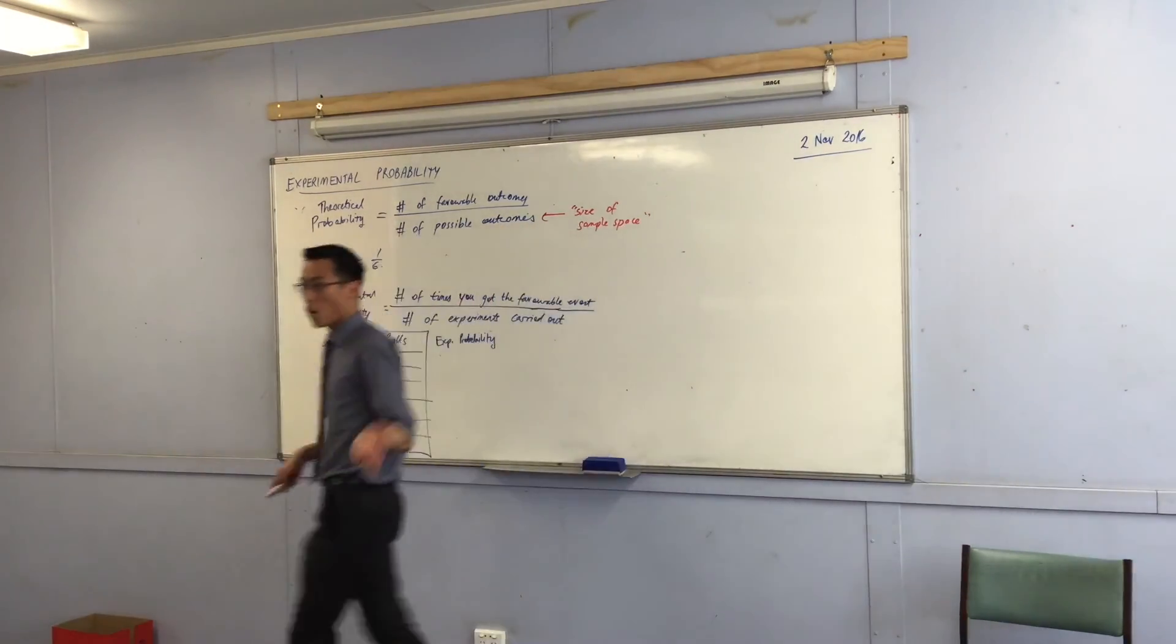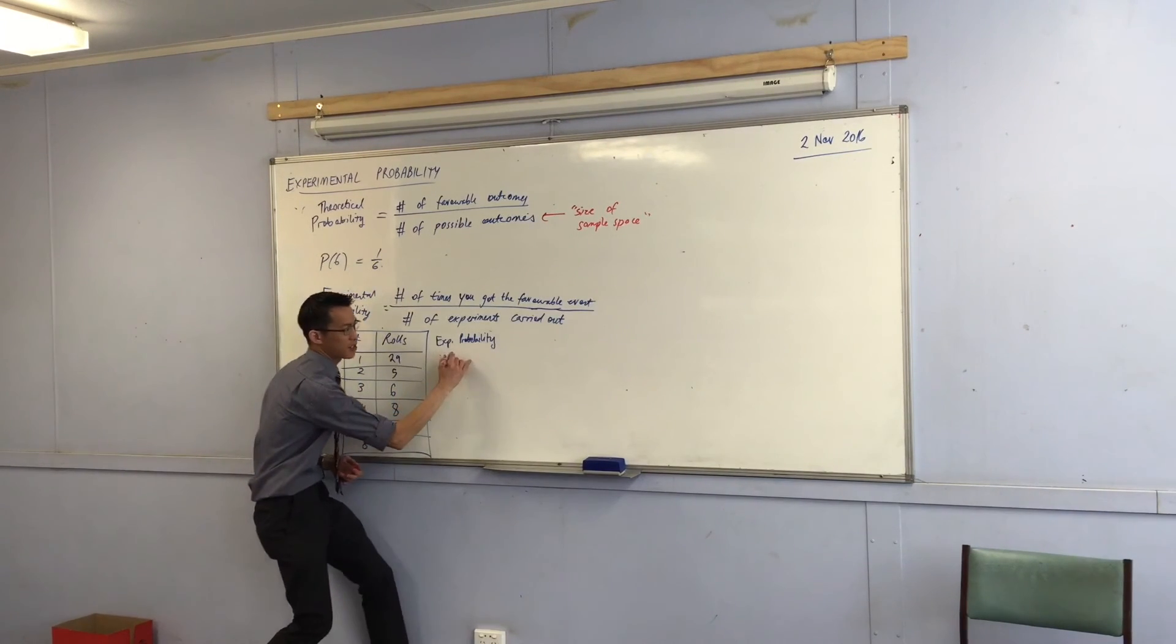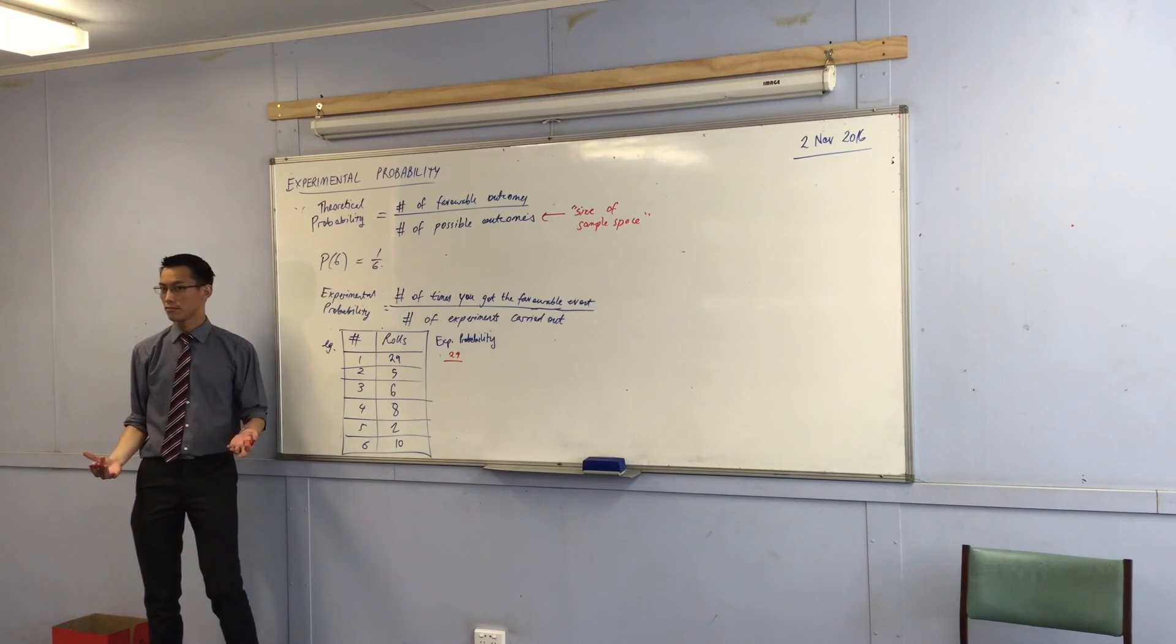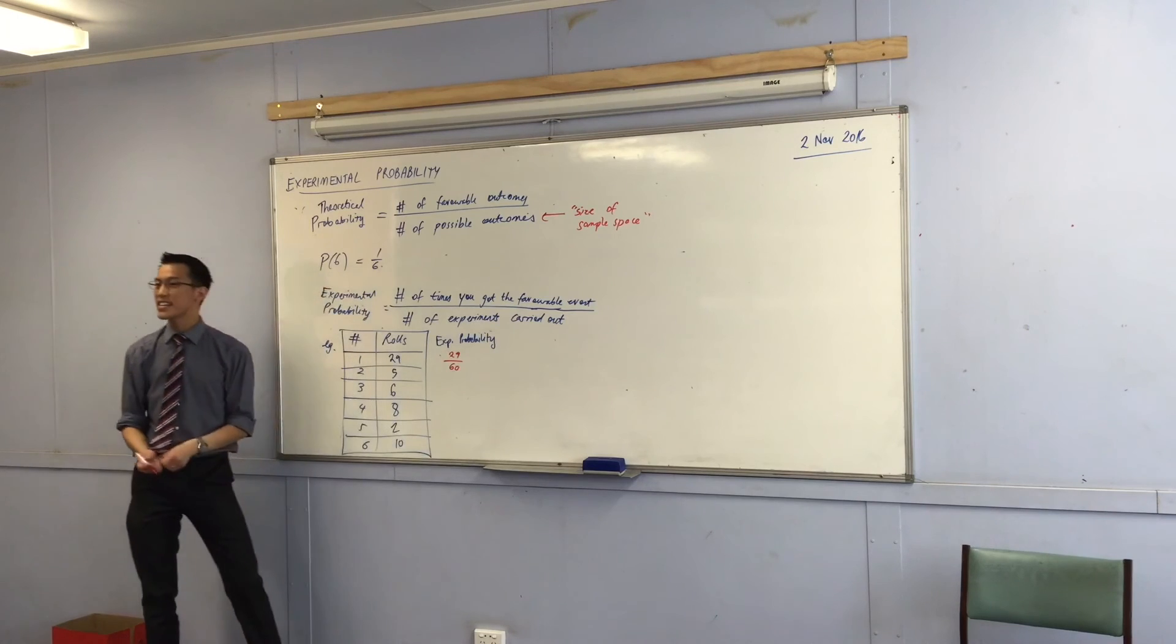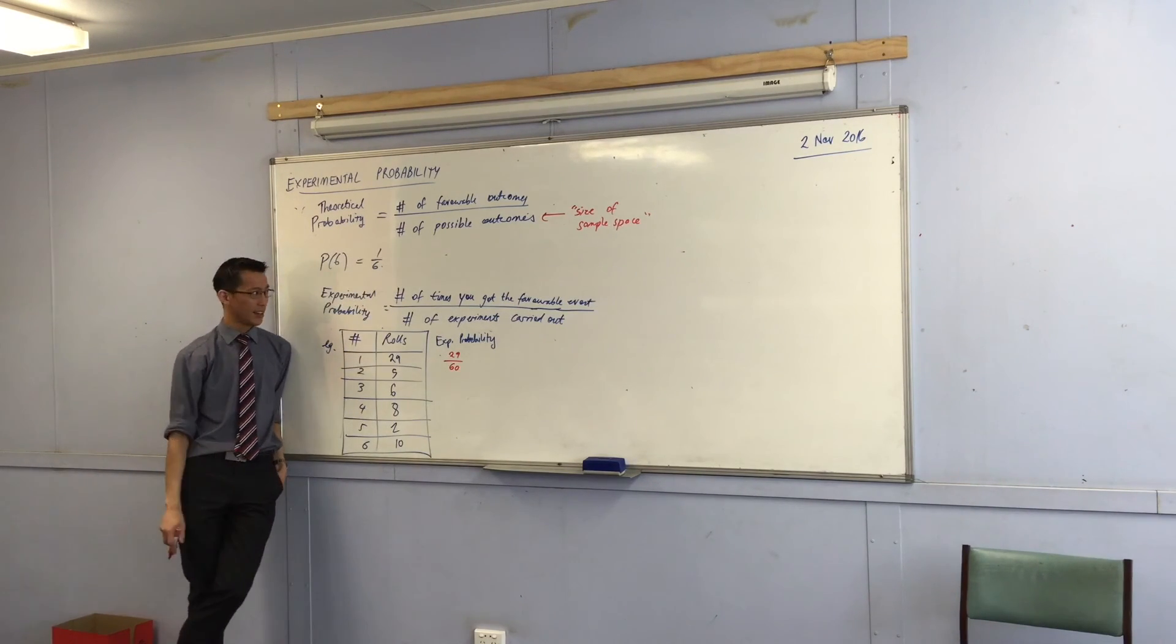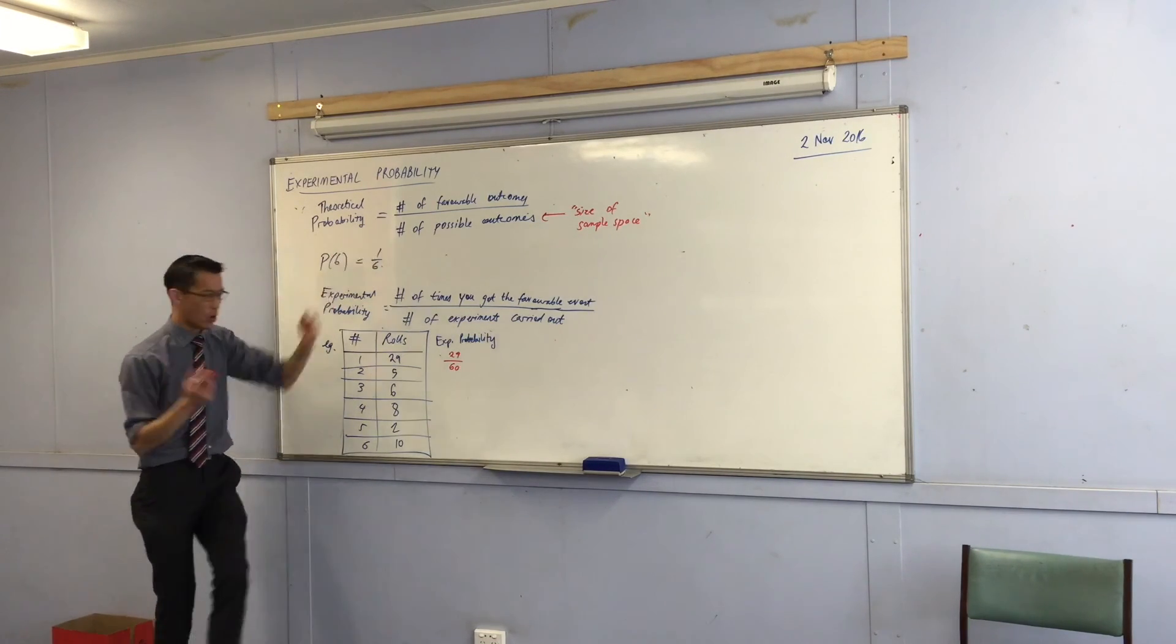So for example, for the ones, right? If the favorable event was ones, that happened 29 times. And then how many experiments did I do? I did 60, right? So that's the experimental probability. Now it's not the same as the theoretical probability. But that's kind of the whole point. I want to find out whether this is going to be what I expect or not.